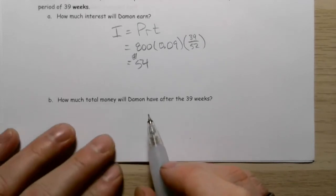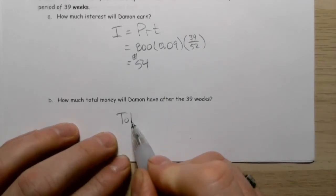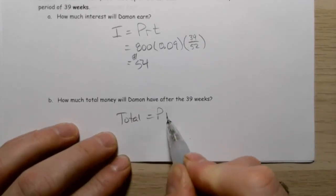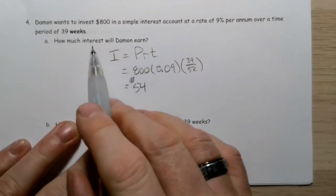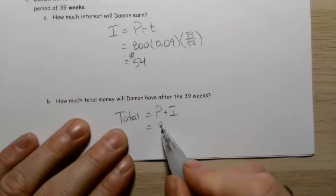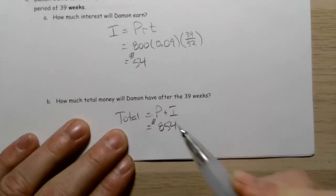How much is he going to have at the end? It's principal plus interest. That's $800 plus $54, which is $854.